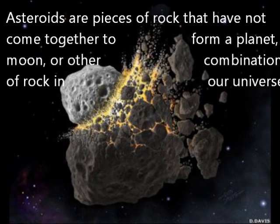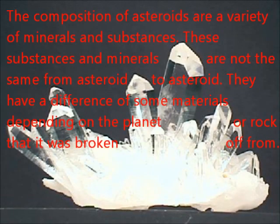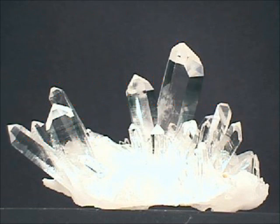Asteroids are features of rocks that have not come together to form a planet, moon, or other combination of rock in our universe. The composition of asteroids are a variety of minerals and substances. These substances and minerals are not the same from asteroid to asteroid. They have a difference of some materials depending on the planet or rock that is broken off from.